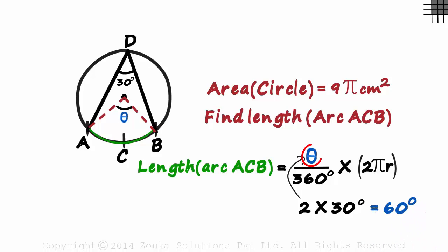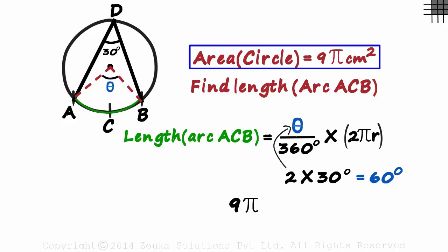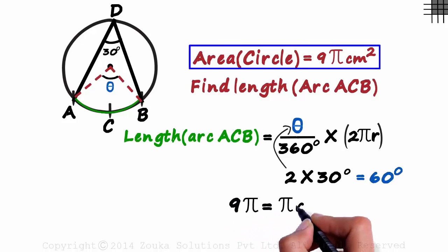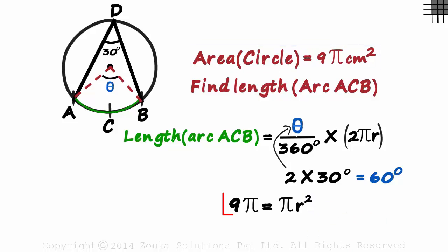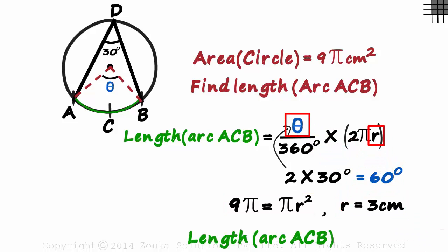We have found one unknown. For the radius, we use the given area of 9π. Since the area of a circle is πr², solving gives r equals 3 centimeters. Substituting these values, we get the length of arc ACB as π centimeters.